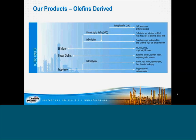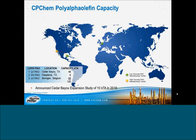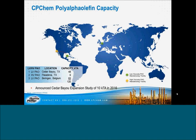From the standpoint of our supply capacity, we have three locations, two CPChem owned. We have our low viscosity PAO unit in Cedar Bayou, Texas, and a low viscosity PAO unit in Beringen, Belgium. We also have our high viscosity mPAO tolling capacity in Pasadena. Recently, as of last year, we announced a Cedar Bayou expansion study of 10 KTA for a low viscosity plant to start up in the year of 2016. So now I'll turn it over to Ken for an overview of CPChem's mPAO.